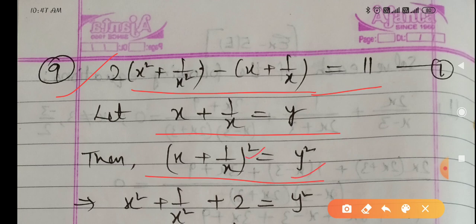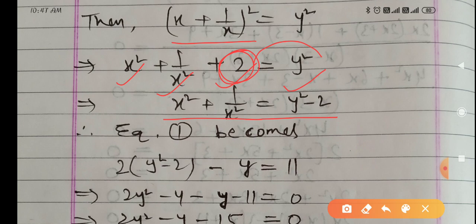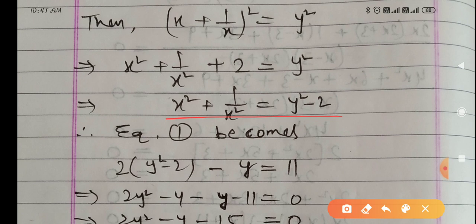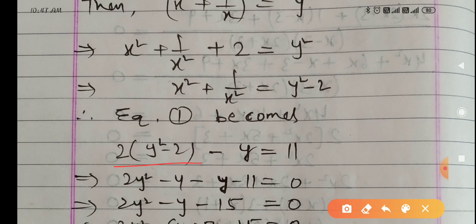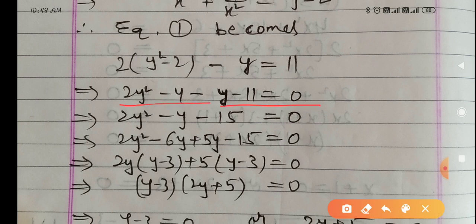Squaring both sides: (x plus 1 upon x) squared equals y squared. Expanding using the (a plus b) squared identity: x squared plus 1 upon x squared plus 2 equals y squared. Taking 2 to RHS: x squared plus 1 upon x squared equals y squared minus 2. Substituting both values into the given equation gives 2(y squared minus 2) minus y equals 11, which simplifies to 2y squared minus y minus 15 equals 0.